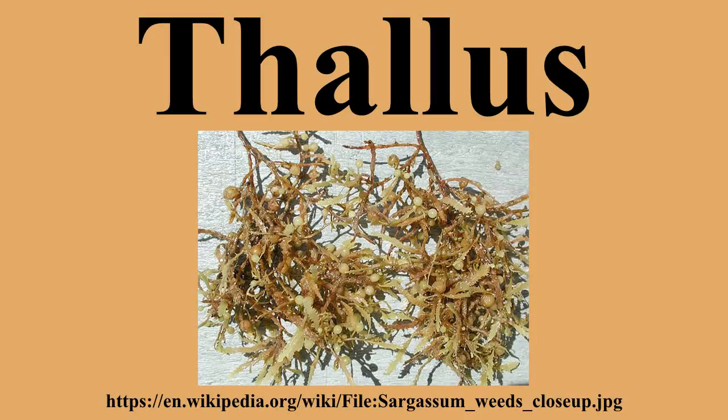Although a thallus is largely undifferentiated in terms of its anatomy, there can be visible and functional differences. A kelp, for example, may have its thallus divided into three regions. The parts of a kelp thallus include the holdfast, stipe, and the blades.